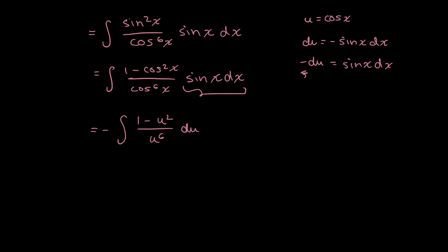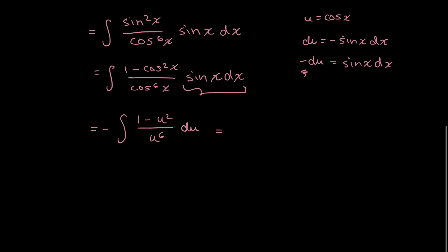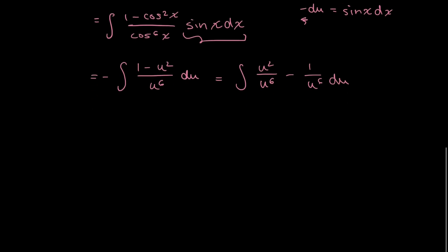Now to deal with this negative, I can just distribute it in into here and it will just cause these two terms to flip. So I'm going to go ahead in one step, separate the fraction. So I'm going to have the integral of u to the power of 2 over u to the power of 6 minus 1 over u to the power of 6 du. Again, what I did is I kind of distributed that negative inside which caused two terms to flip and I also just separated the fraction.